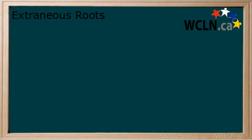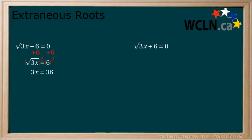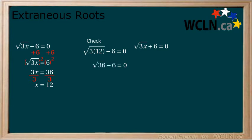Consider the following equations: square root of 3x minus 6 equals 0, and the square root of 3x plus 6 equals 0. Now solve each for x. Starting with the first equation, we add 6 to both sides, then square both sides to remove the square root. Finally, divide by 3 for a possible solution of x equals 12. Now to check if this is an extraneous root, we replace it back into the original equation. 3 times 12 equals 36, the square root of 36 is 6, and 6 minus 6 equals 0. This is true, so x equals 12 is a solution.